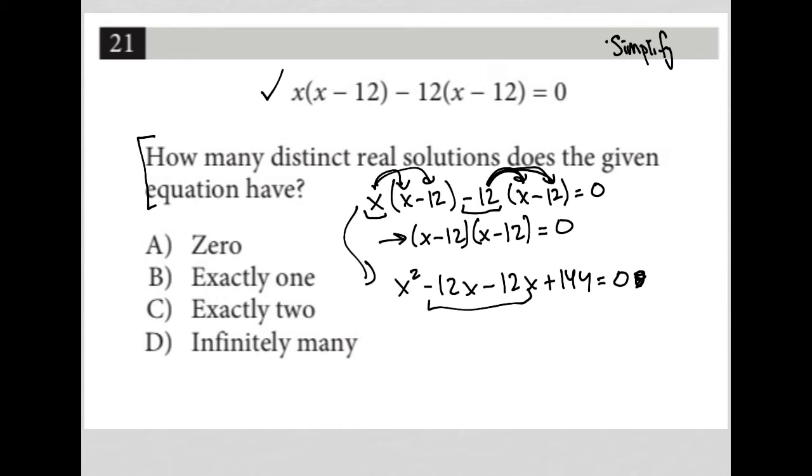Then I combine these middle terms. So, I have x squared minus 24x plus 144 equals 0. I can simplify this into x minus 12 times x minus 12, because the two factors of positive 144 that, when added together, give me a negative 24 are negative 12 and negative 12.